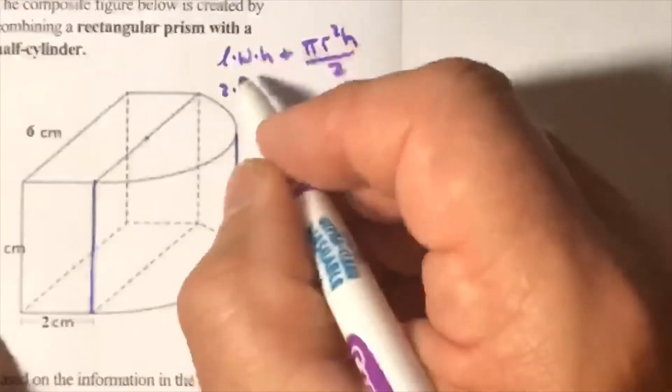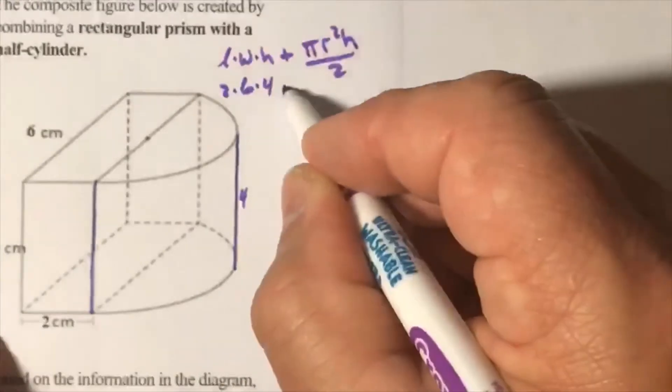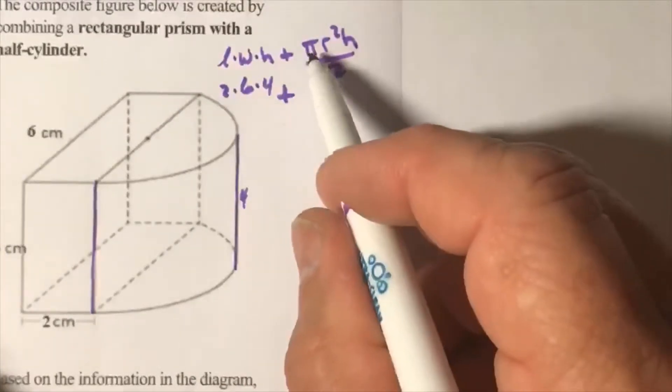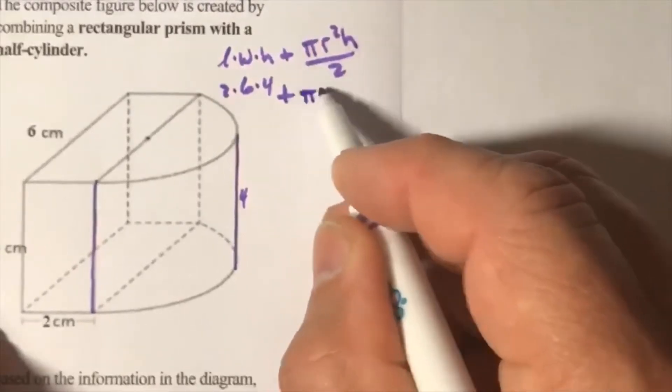My length and width - that's 6 and then the height is 4, we'll keep that the same. Now it didn't say anything about letting pi be anything, so we're going to use the whole pi. We'll bring pi back down.